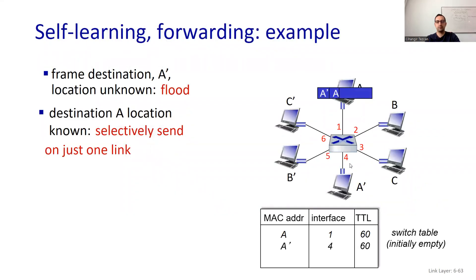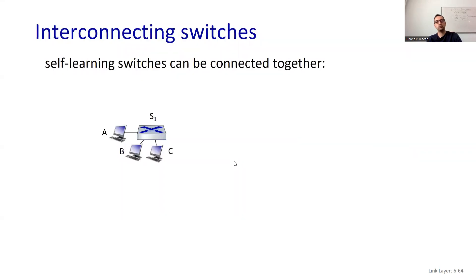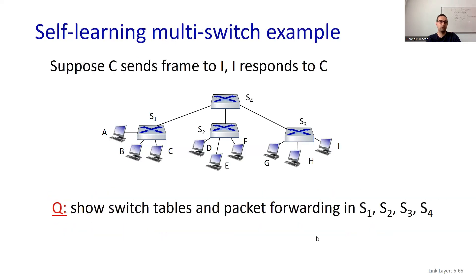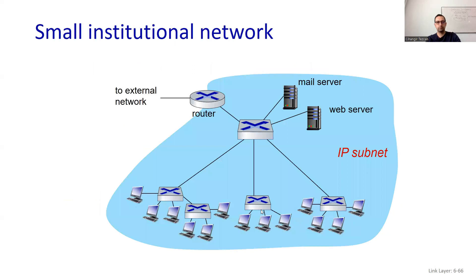Self-learning switches can be connected together. For example, sending from A to G: S1 learns to forward the frame destined to G via S4 and S3. Self-learning works exactly the same as in the single-switch case. A small institution network works like this: switches in many departments connected to another switch, which connects to a router and out to the outside world. For a big university, you'd need more routers.